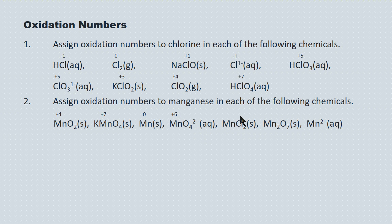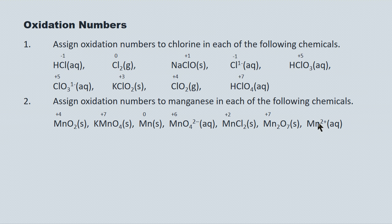For MnCl2, it's an ionic compound — chlorine has a minus one charge with two of them for a total of minus two, so manganese must be plus two. For Mn2O7, it's ionic and oxygen is minus two for a total of minus fourteen; there are two manganese atoms, so each manganese must be plus seven. Finally, for the Mn2+ ion, its oxidation number is the same as its ion charge — a two plus charge means a plus two oxidation state.